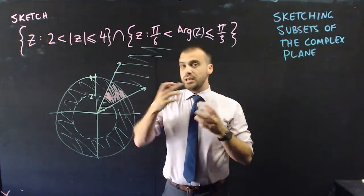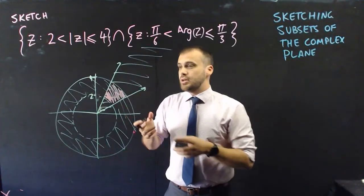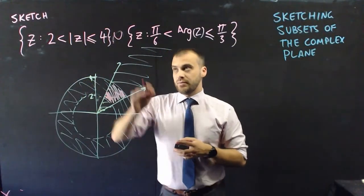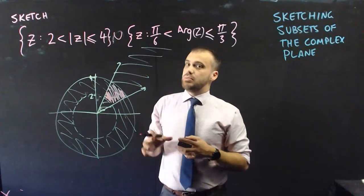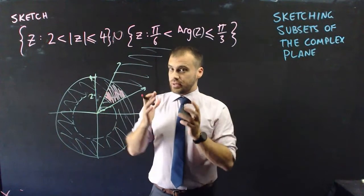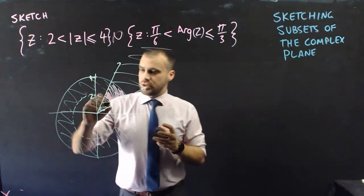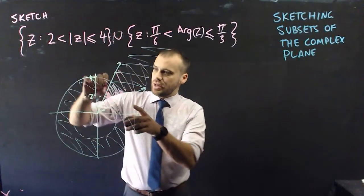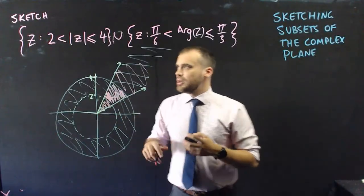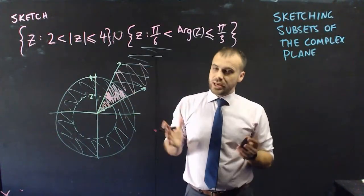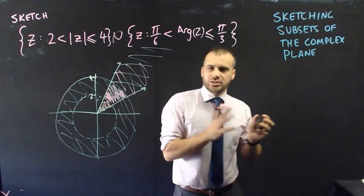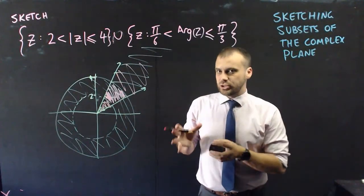An interesting related question: what if we flip the AND to OR? Then instead of needing both conditions to be met, we just need one or the other. In that case, everything shaded for either condition is valid — the full annular band and the full angular wedge together. We've covered a lot of ground here. Practice these, but really try to understand what's being asked, then decide whether to tackle it geometrically or algebraically.